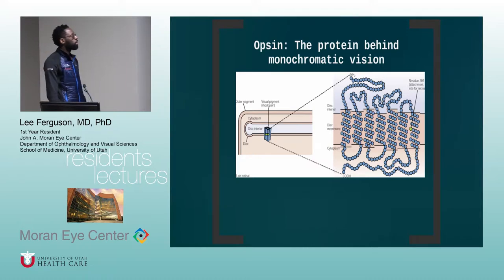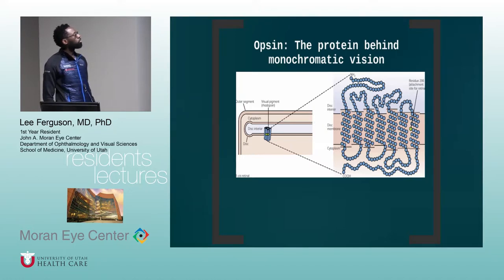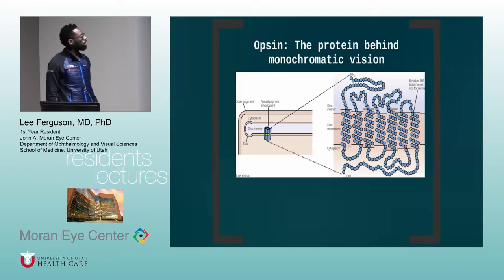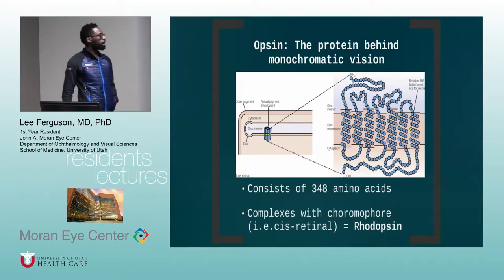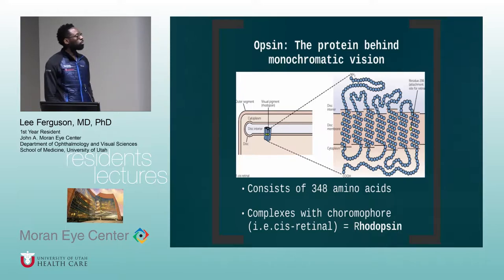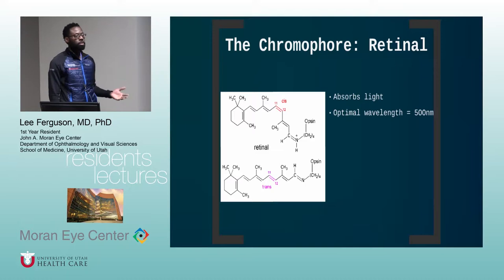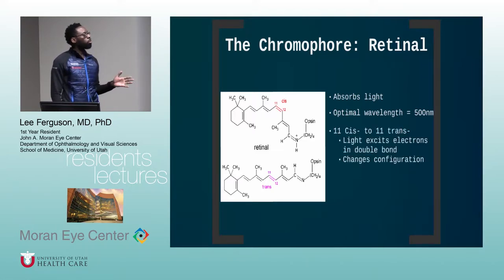In talking about the light pathway, it's important to talk about how light is transduced. You have this opsin protein, which is important as a component to the actual chromophore. Specifically in rods, it's located at the cell disc membrane and consists of about 348 amino acids. It complexes with the chromophore — in this case, retinal — in order to form rhodopsin. The chromophore absorbs light at a specific wavelength.